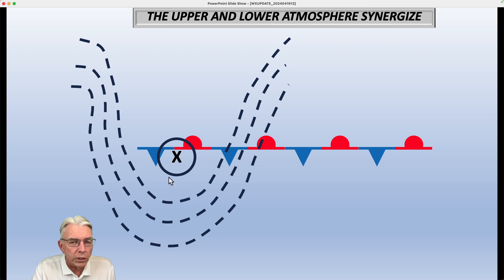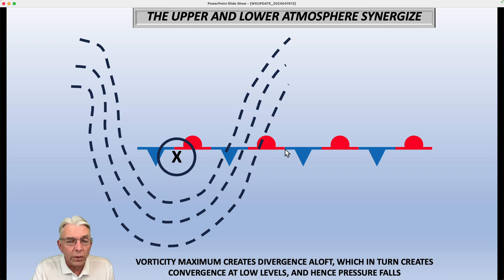So the surface weather map is basically a reflection of what's going on up there. So if one of these little vorticity maxima come along and they start to, or it starts to increase the divergence aloft and the convergence of the ground in one area more than another, then you get the formation of a low pressure area where the pressure is lower than it is anywhere else.